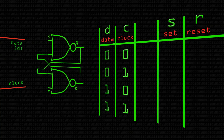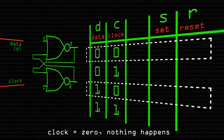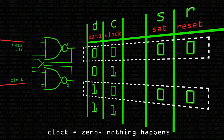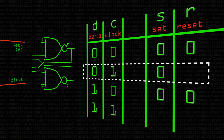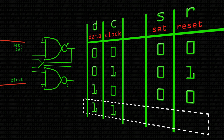Whenever clock is zero, we don't want the values to change, so we want the output to S and R to be zero. If the data's zero and clock is one, then we want the thing to be reset, so we want the reset pin to be high — S to have zero output and R to have a one output. If D is one and clock is one, then we want to change the value because the clock is high. D is one, so we want to set it — S to be one and R to be zero.